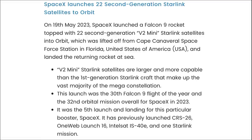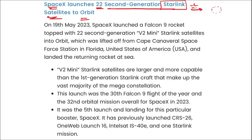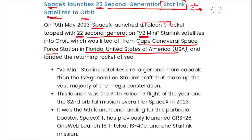SpaceX has launched 22 second-generation Starlink satellites into orbit. SpaceX launched a Falcon 9 rocket with 22 second-generation V2 mini Starlink satellites, lifted off from Cape Canaveral Space Force Station in Florida, USA. V2 mini Starlink satellites are larger and more capable than first-generation Starlink craft, forming part of the mega-constellation to provide satellite internet even in remote areas.